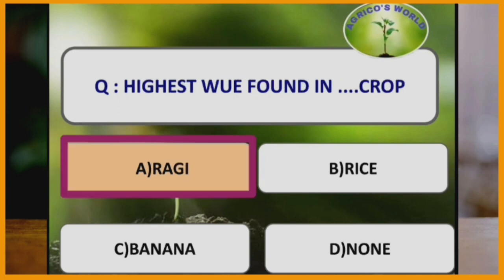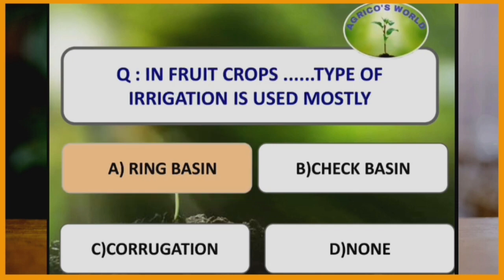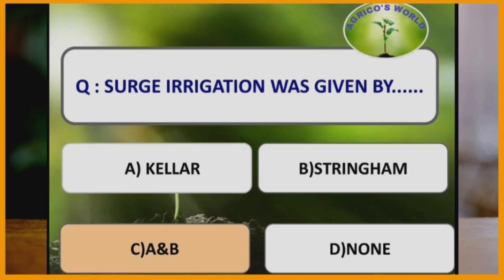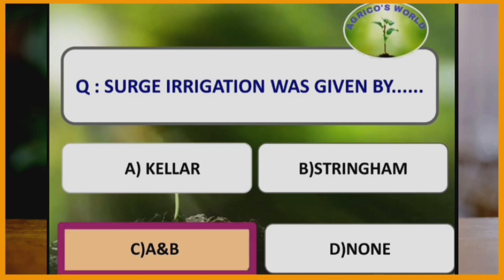Duty of rice is 75 hectare mm per second. Highest water use efficiency is found in ragi. In fruit crops, ring basin type of irrigation is mostly used. Surge irrigation was given by scientists Keller and Stringham.